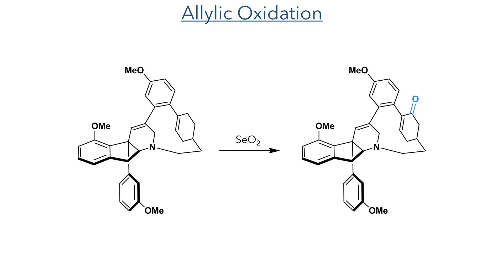With the macrocycle in hand, the authors then turned their attention to the next key step: an allylic oxidation using selenium dioxide. The authors screened many oxidation conditions and found that this Riley oxidation was the most successful and selective. Interestingly, they found that this oxidation was highly accelerated by the strain within the system compared to model systems without the ring strain.